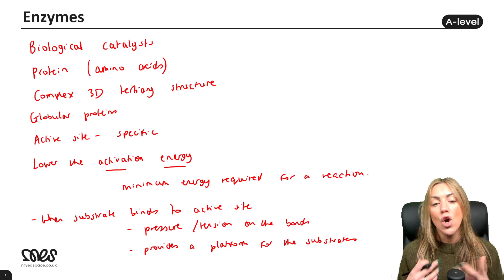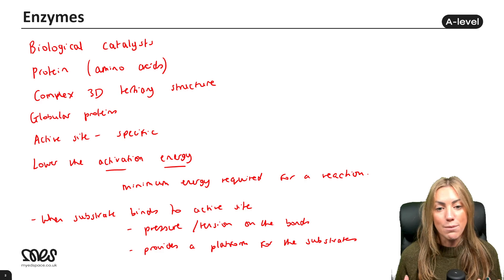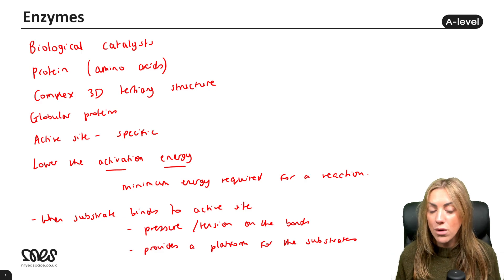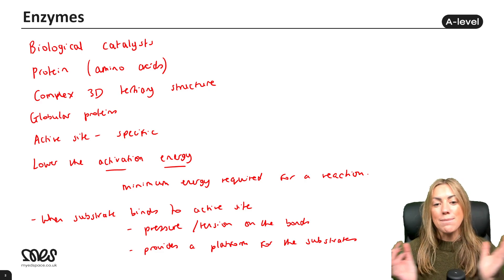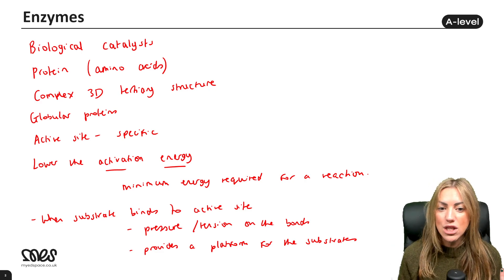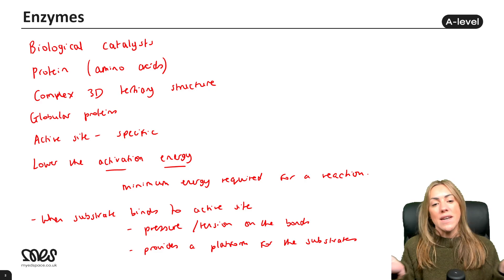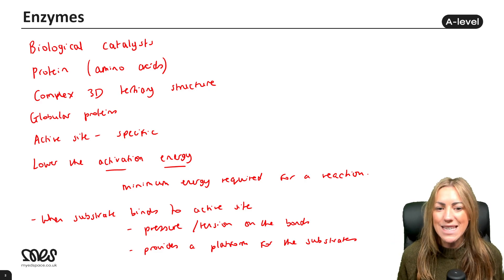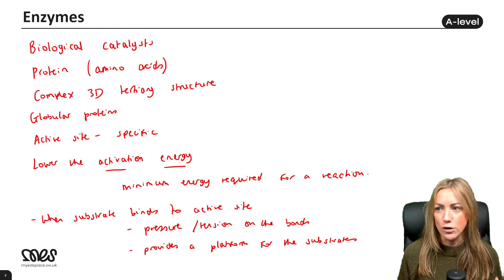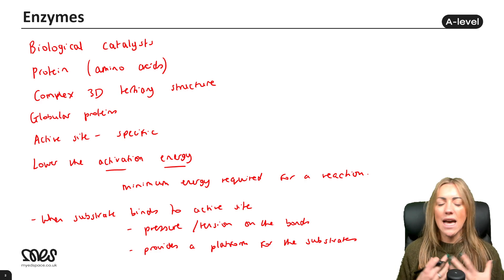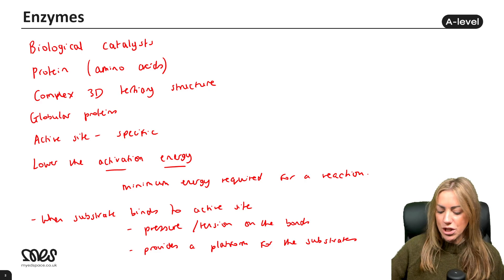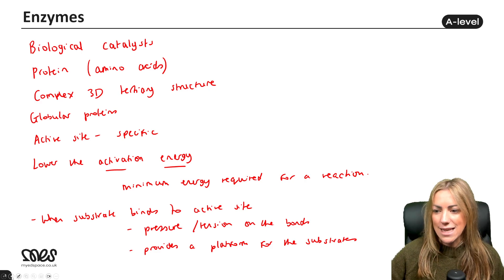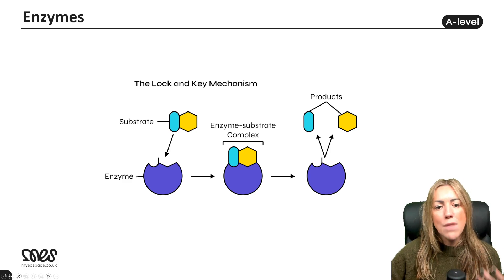If the enzyme is joining substrates together in a condensation reaction rather than hydrolyzing bonds, it provides a platform that brings the substrates together, making it easier for bonds to form. So it depends what the enzyme is doing — either putting tension on bonds to break them, or bringing substrates together to form bonds.